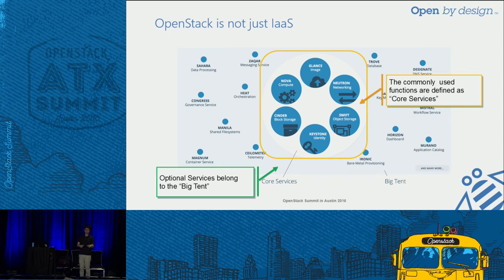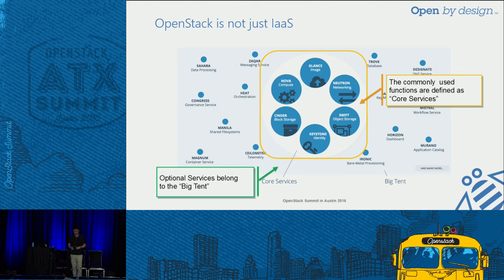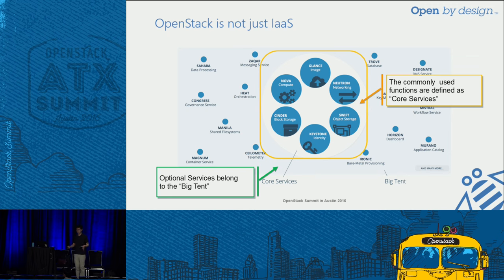When we look at projects, there are two things: core services and big tent. Core services are projects with a long history that provide the basic IaaS functions — compute, network, and storage. Outside the core services we have big tent. Projects like Sahara, which provides Hadoop as a service, and Trove as a database as a service. You can see that OpenStack is now not just IaaS.